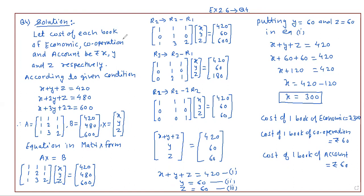What has been given? Let's read the question. The cost of one book of economics, one book of cooperation, and one book of account is Rs. 420. Second condition: one book of economics, two books of cooperation, and one book of account is Rs. 480. Last condition: the cost of one book of economics, three books of cooperation, and two books of account is Rs. 600.